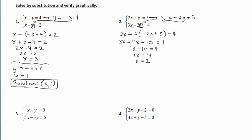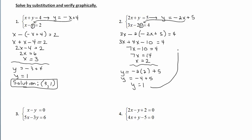We have the x-coordinate, so now back-substitute x equals 2 into the equation solved for y: y equals negative 2 times 2 plus 5, which gives y equals negative 4 plus 5, so y equals 1. The solution is the ordered pair (2, 1).